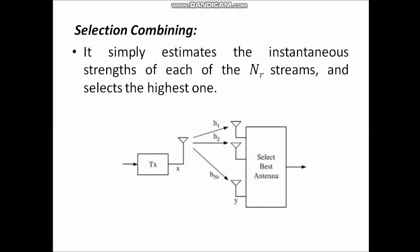In selection combining, it simply estimates the instantaneous strength of each of the NR streams and selects the highest one. As you can see in the figure, the transmit antenna transmits signal X and at the receiver section, the received signal is represented as Y. There are NR number of receive antennas. H1, H2, and HNR are channel gain factors. Only one branch with the highest signal to noise ratio is selected and given to the receiver section.